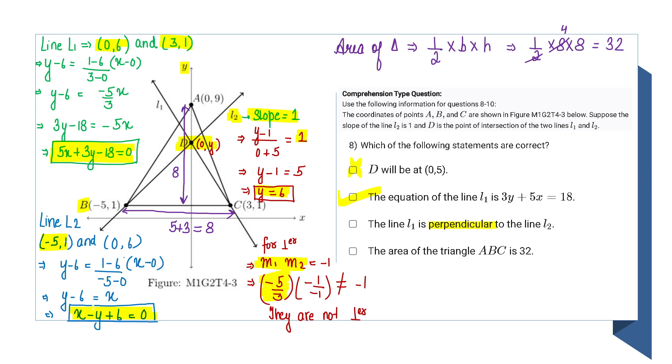The slope of L2 will be -1/-1, that is 1, which is 45 degrees. When we multiply both slopes, this won't be equal to -1, therefore they are not perpendicular. So option C gets rejected.